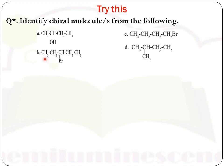In molecule B, the first carbon has three hydrogens and the second has two hydrogens — neither is a chiral carbon. The third carbon has one hydrogen, one bromine, but both groups bonded on either side of the central carbon are identical, so this central carbon is not chiral. Hence molecule B is not chiral. In molecule C, all carbons have either three or two identical hydrogens — no chiral carbon, so it is not chiral. In molecule D, the first and last carbons each have three hydrogens, and the second carbon has two methyl groups — not chiral. The third carbon also has two hydrogens — not chiral.